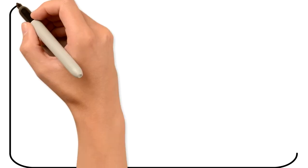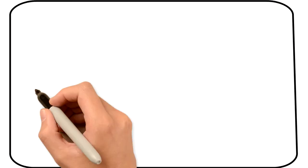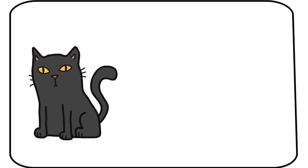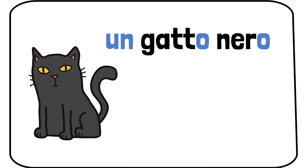Let's look at more examples. Un gatto nero, a black cat. Here again, the adjective is placed after the noun. Instead, in English, black is placed before.